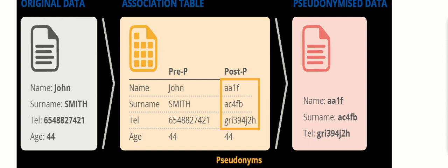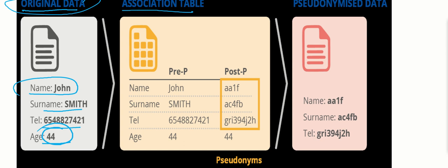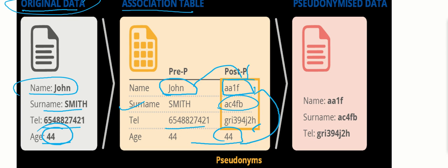Now we are going to see how pseudonymization techniques work. Suppose this is the original data — the name of a person is John, the surname is Smith, there is a telephone number, and an age. This original data is captured by the organization. Using pseudonymization techniques, with the help of an association table, the name John would be transferred after pseudonymization to something like 'AA1F'. This depends upon the algorithm used. The surname and telephone number are also totally changed.